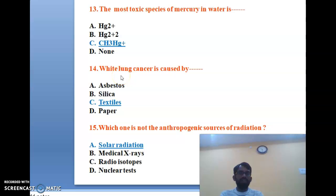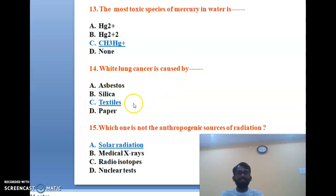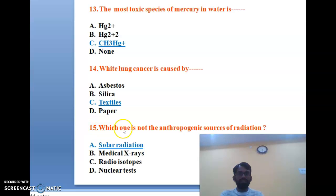The fourteenth question: white lung cancer is caused by asbestos, silica, textile, or paper? White lung cancer is caused by the textile industry — those working in textile industries mostly suffer from this disease. The correct answer is C, textile.